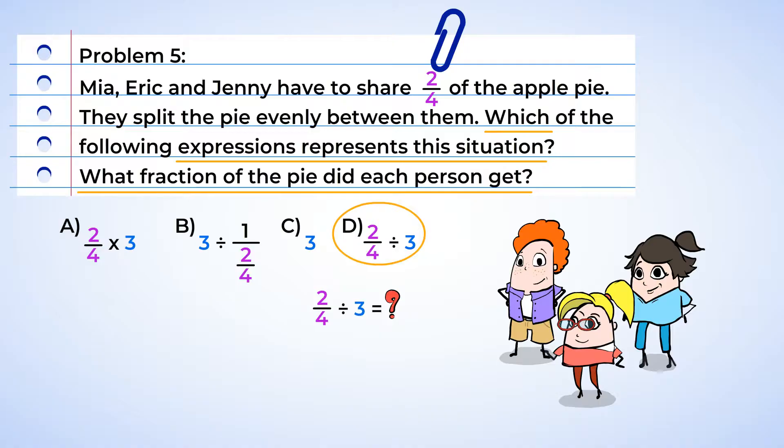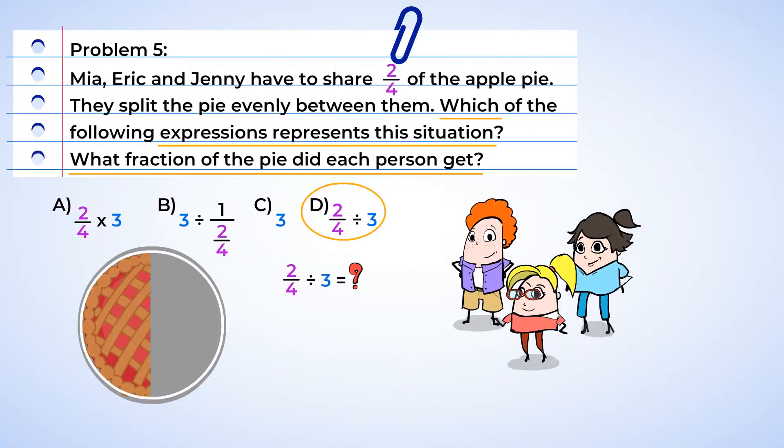Now we have the expression that represents the situation. We can solve it to find how much of the pie each person gets. Let's visualize it. So we have a circle to represent the whole pie, and then we need to divide the whole into four equal pieces to get two-fourths of the apple pie that we need to share between the three friends. Oh, but hang on. Two-fourths? Well, that's actually one-half. If this whole is cut into three equal pieces, well, you can see that there are six parts that make up the whole apple pie. And this means that one part represents the fraction of one-sixth.